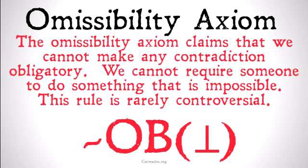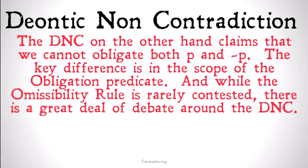That doesn't seem to be problematic. However, the DNC, on the other hand, claims that we cannot separately obligate both P and obligate not-P. The key difference is going to be in the scope of the obligation predicate. In one case, obligation is over both P and not-P at the same time, or any other contradiction. In the other case, the obligations are separate — obligation is over P and obligation is over not-P.